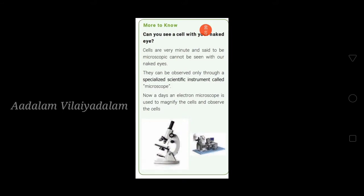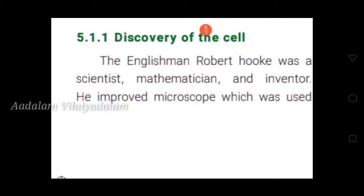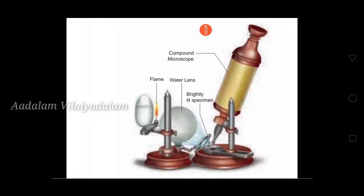Cells are very tiny — we can't see them with the naked eye. We can only observe them through a specialized scientific instrument called a microscope. Today we use the electron microscope. The first microscope was invented by Robert Hooke, and it was called a compound microscope. He placed a water lens beside the microscope to focus light from an oil lamp.